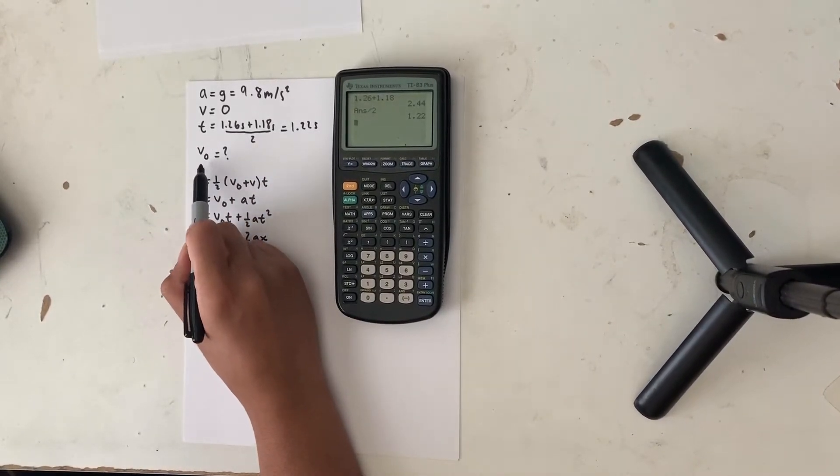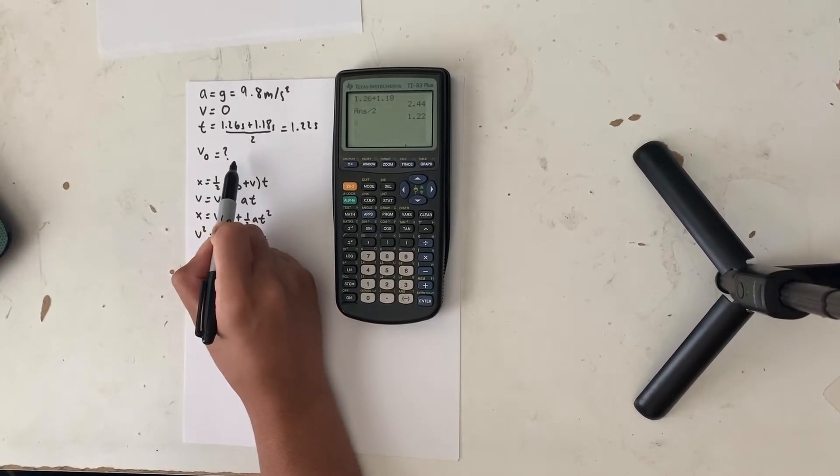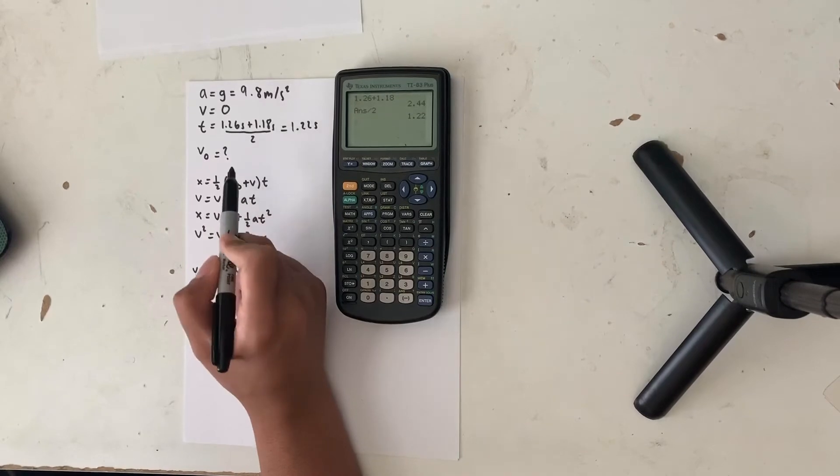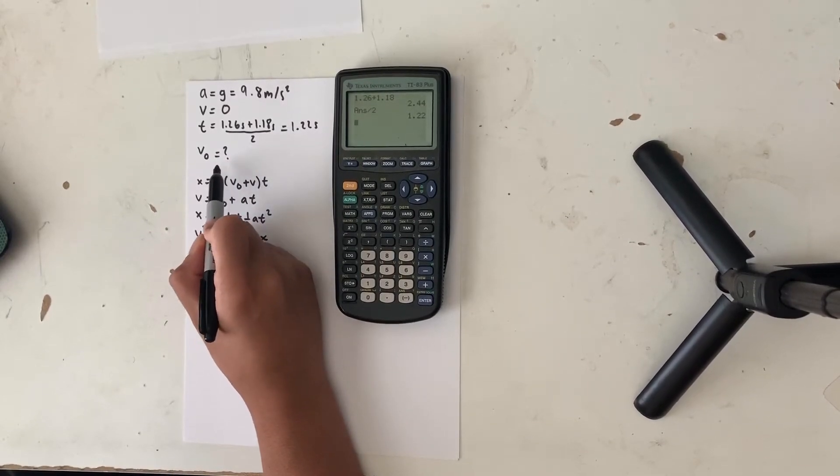The only variable that I don't know in this problem is my initial velocity and that is the speed that I actually fell at during this time. And it is the value that I will be calculating for in the next steps.